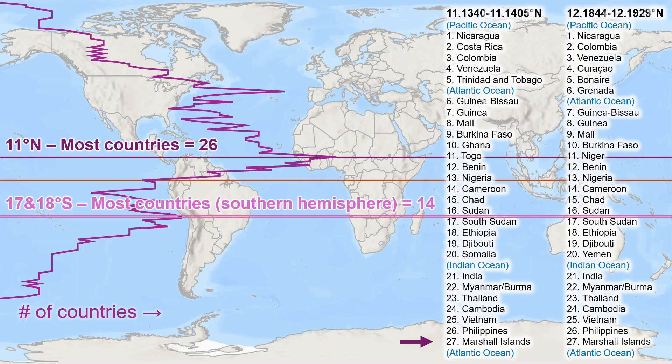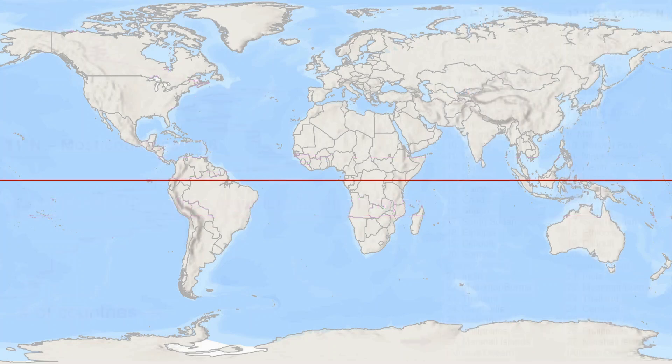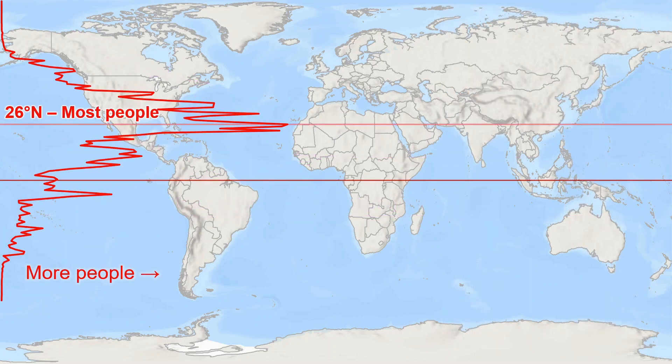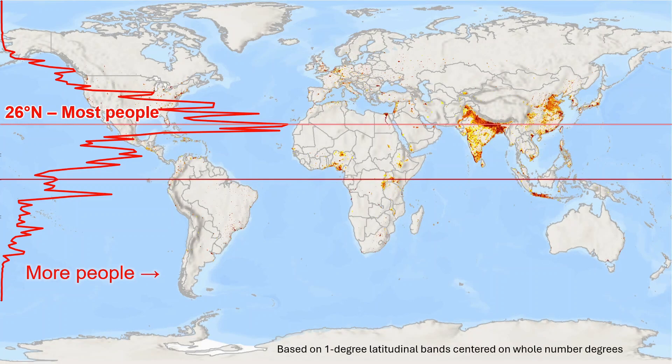For population distribution by latitude, the most populous parallel centers on 26 degrees north. Adding population density product, you can see that this latitude runs right through the densely populated northern plain of India. The southern hemisphere population spike clearly aligns with the world's most populous island of Java, one of the greater southern islands of Indonesia.